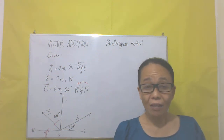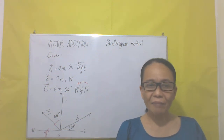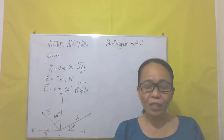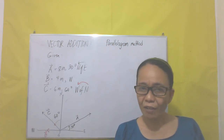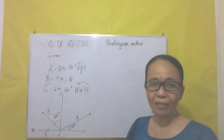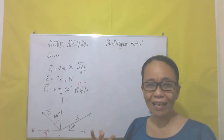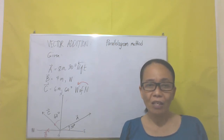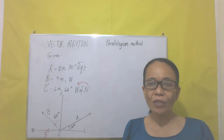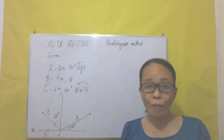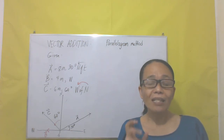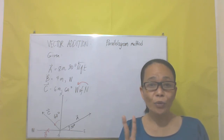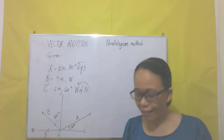Good morning. This time we have another method of adding vectors: the parallelogram method. Last time we used the head-to-tail method or polygon method. The polygon or head-to-tail method is applicable for two or more vectors, but the parallelogram method is applicable only for two vectors.